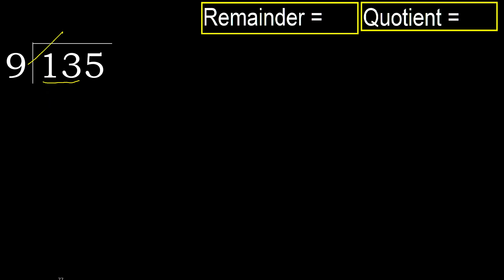9 multiplied by which number is nearest to 13, but not greater? 9 multiplied by 2 is 18 — 18 is greater. Multiplied by 1 is 9, which is not greater. Ok. 13 minus 9 is 4. Next.